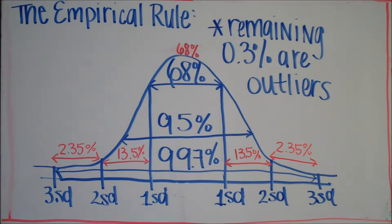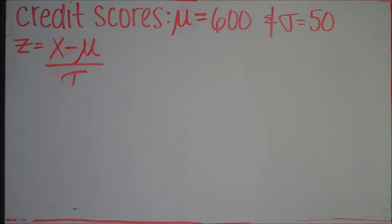So let's work a problem. The problem states: credit scores are normally distributed with a mean of 600 and a standard deviation of 50. Using the empirical rule, what is the probability that a credit score is between 500 and 650?